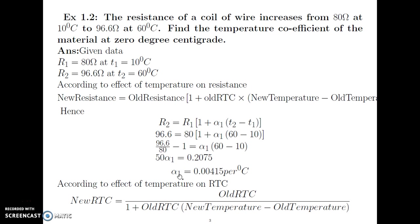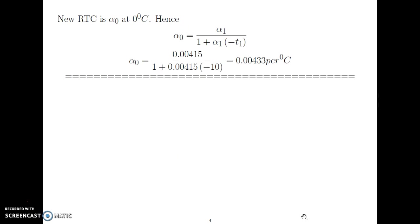This is the RTC alpha1 at T1, which is 10 degree Celsius. But the problem asks for RTC at 0 degree Celsius, so we are not done. To calculate the RTC at 0 degree Celsius, we use the formula: new RTC equals old RTC divided by 1 plus old RTC times (new temperature minus old temperature). Here, new RTC is alpha0.